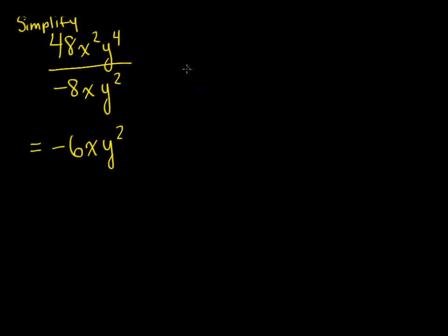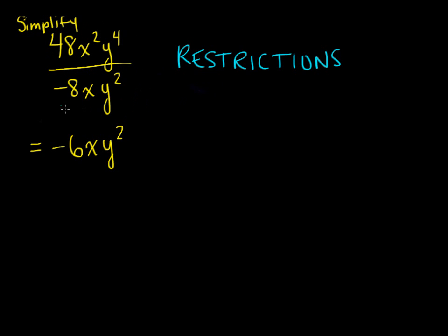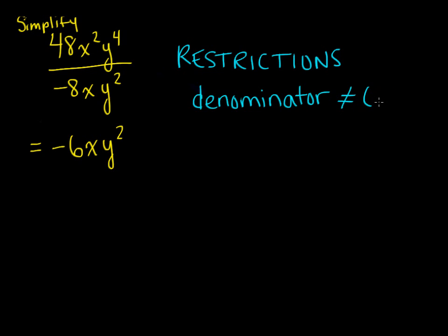When we simplify rational expressions we also want to state something called restrictions. Restrictions are the values of any variables involved that cannot be used in the expression. Looking at the denominator specifically, we know that in any fraction or rational expression the denominator cannot be zero, because if the denominator were zero the expression would be undefined — mathematically we cannot divide by zero. So for restrictions we look at what values of x or y would cause the denominator to equal zero.